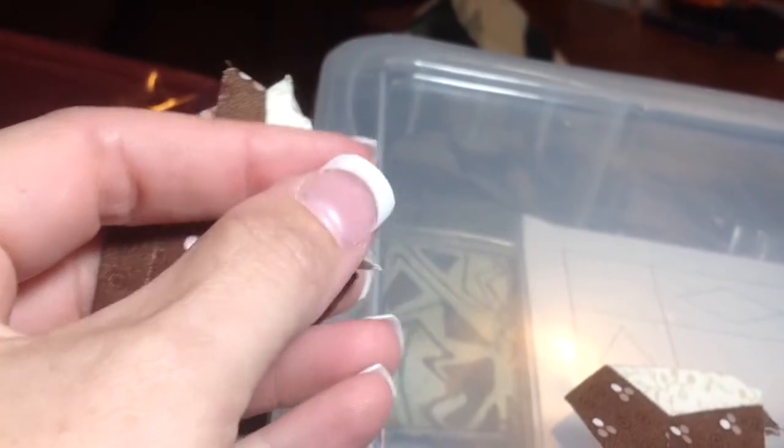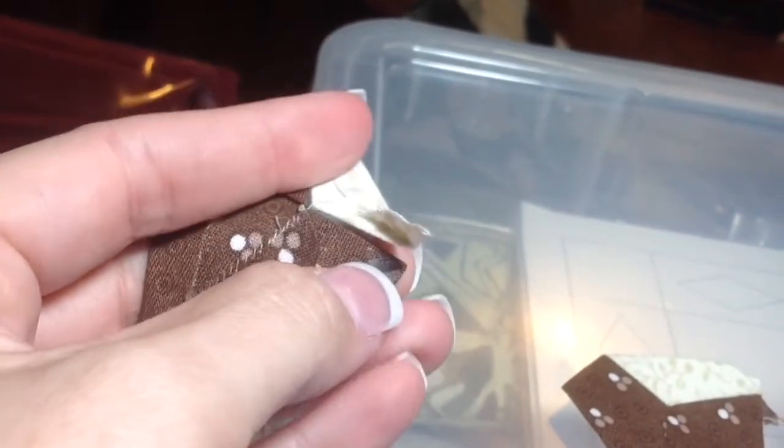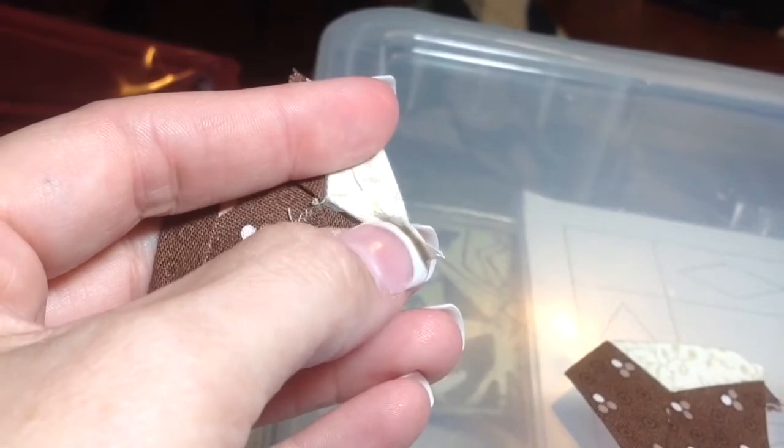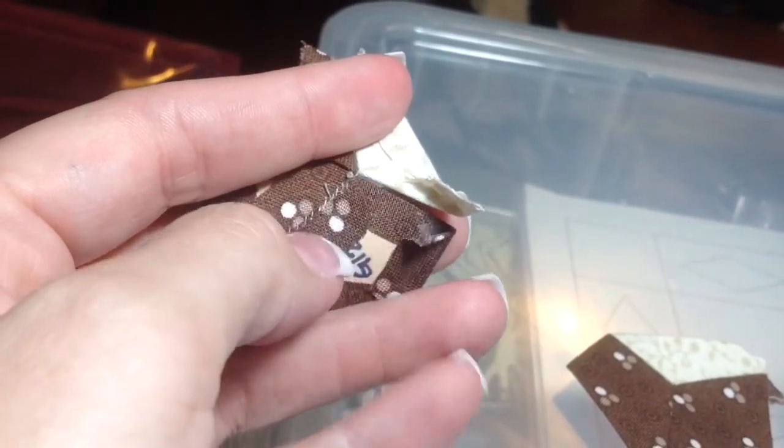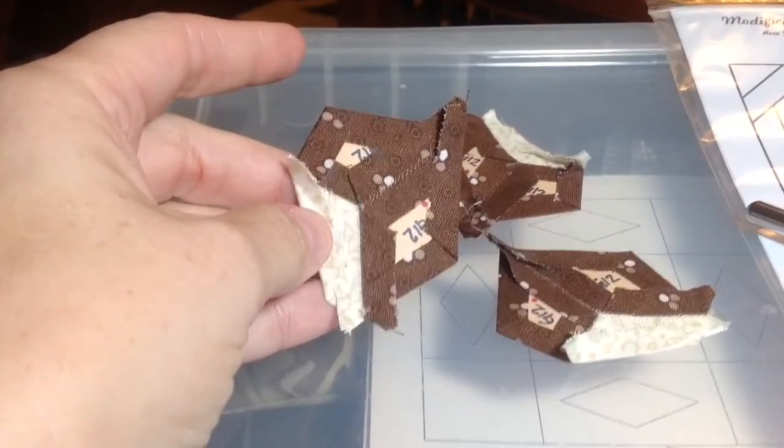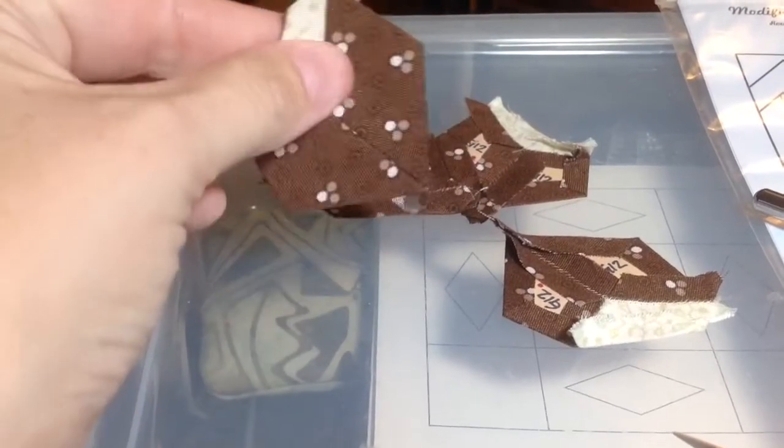You need to lift up your flaps, before you start to stitch. Because if you stitch these down, you're not going to be able to get your papers out. So now I have all four of these units made.